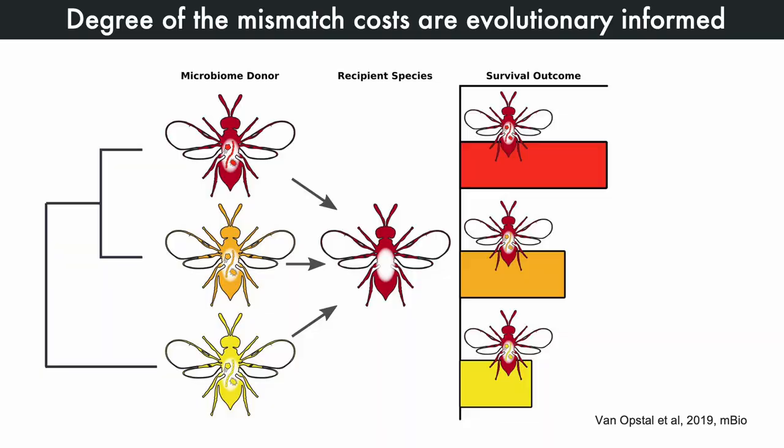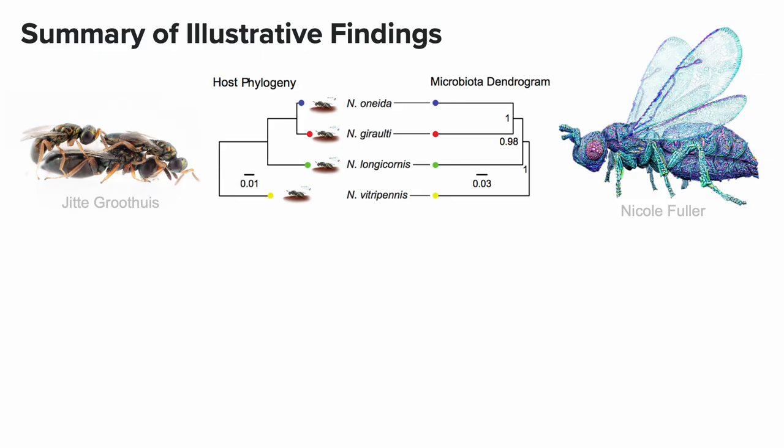Microbiome really does matter, and it's evolutionarily informed — it depends on which host species you're putting it into, whether it's the self or a related species. This indicates that there are likely selective pressures shaping the alliance of a host with its microbiome. Visualizing this: take a microbiome donor, move its microbiome into recipient species, and fitness is informed by evolution — if you receive your own microbiome, you're great; if you get a slightly different microbiome, you have a cost; and if you get a very divergent microbiome from a very divergent species, it's the biggest cost.